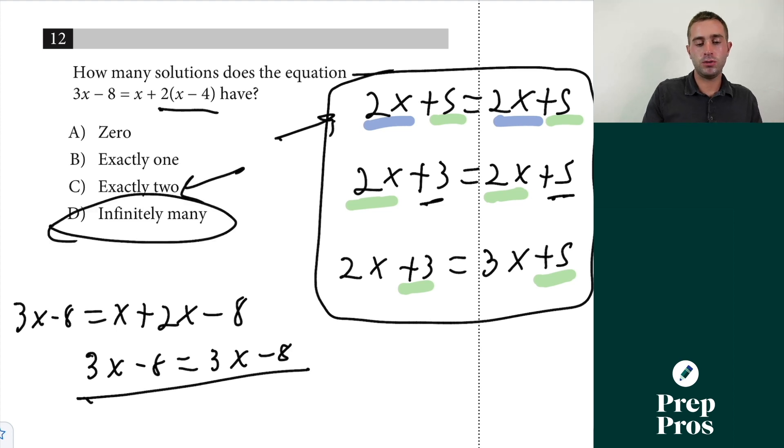Now you could have exactly two solutions if you're dealing with a polynomial here.